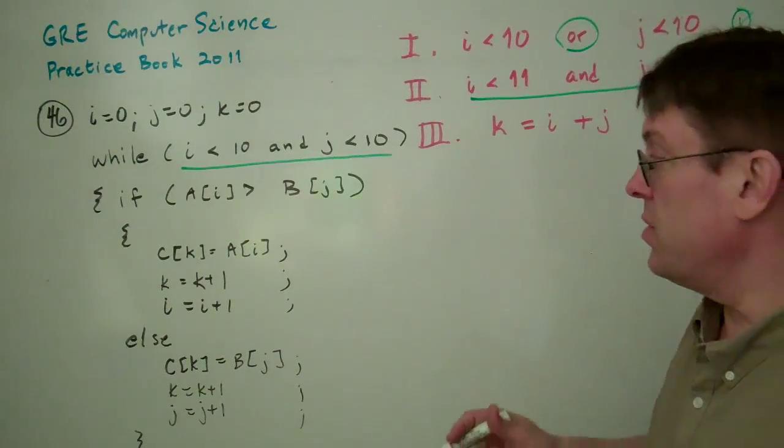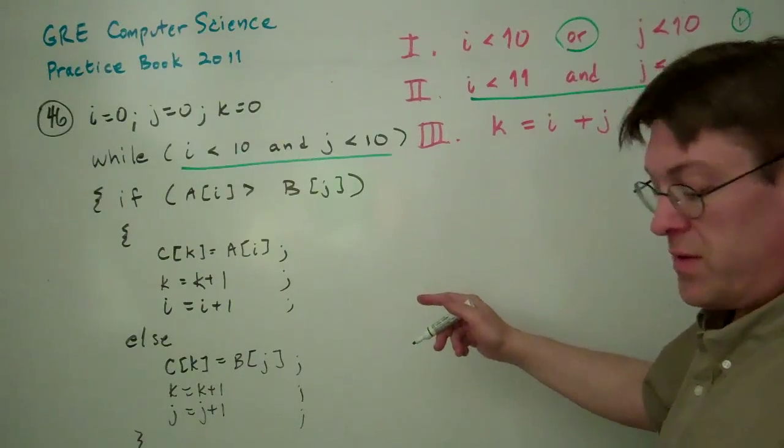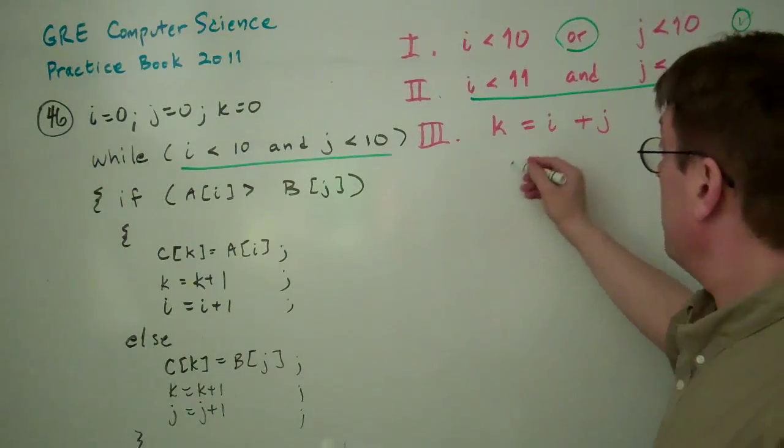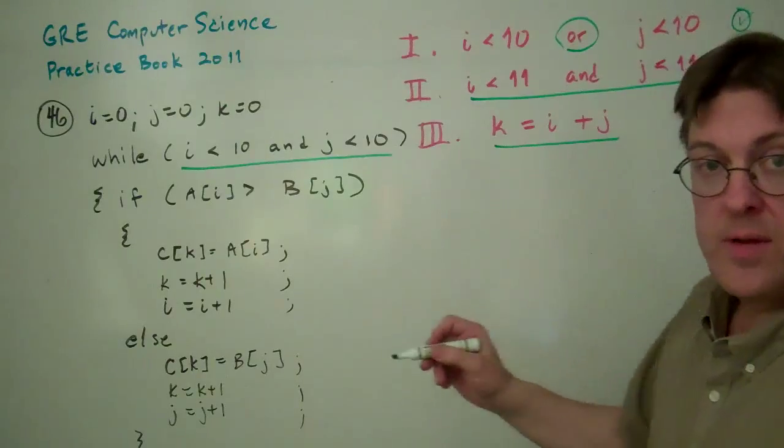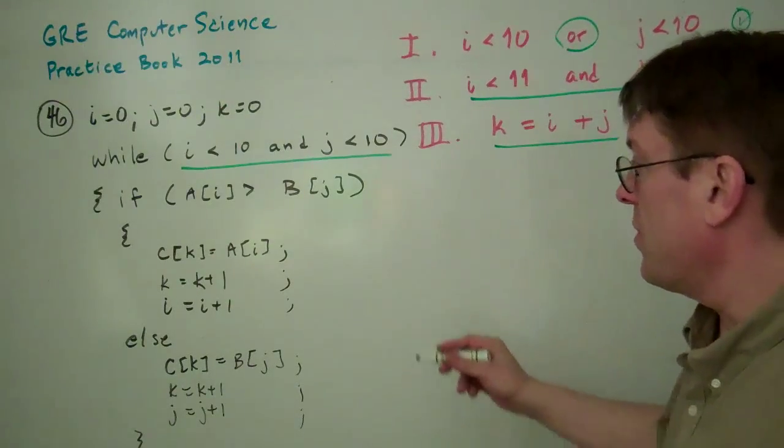The one that takes a little bit of time to calculate out is 3, that K equals I plus J at all times.